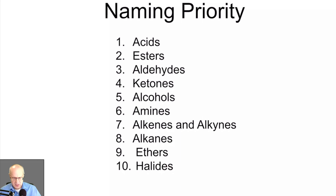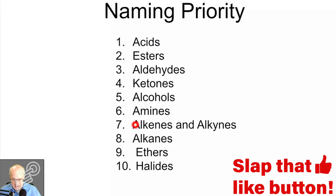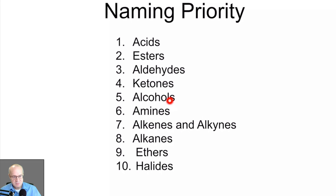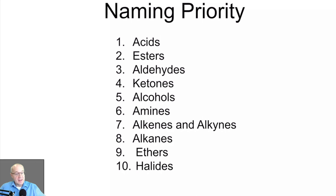So if you have an alcohol and an alkene in your molecule, you're going to name it as an alcohol. If you have an alcohol and a halide, you would name the molecule as an alcohol, which means the OH group gets the lower number. It'll become more clear when we see examples, but just keep this in mind while we move forward.